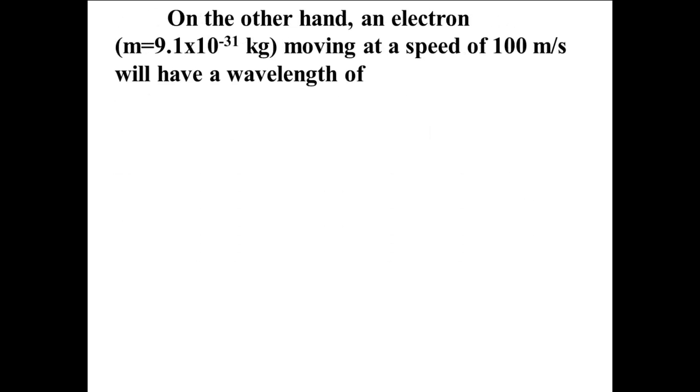Now let's think about an electron whose mass is 9.1 times 10 to the minus 31st kilograms moving at a speed of 100 meters per second. Lambda equals 6.626 times 10 to the minus 34th joule seconds divided by 9.1 times 10 to the minus 31 kilograms times 100 meters per second which is 7.3 times 10 to the minus 6th meters.